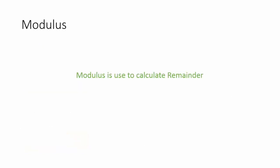Now we have the modulus operator, which is quite simple. If you have a variable and want to get the remainder of a division, you can use the modulus operator. It is represented by the percentage sign and returns the remainder.